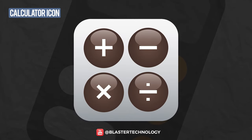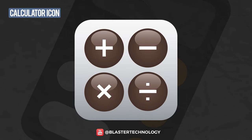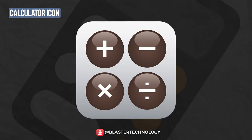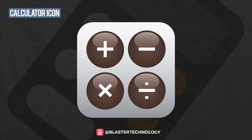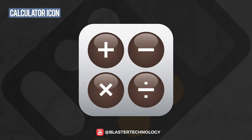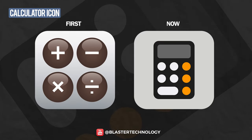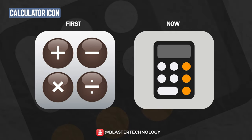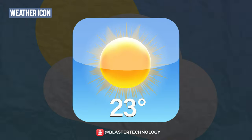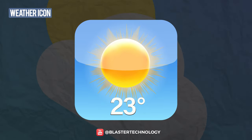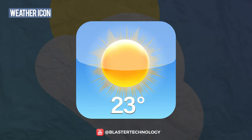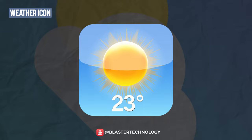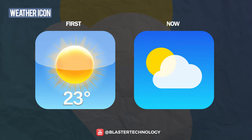The Calculator application icon was among the most modified icons. At first it showed calculation marks enclosed in brown circles. The app icon now is a real calculator but with a flat look. A bright sun showing the degrees was placed on a blue background — that was the Weather app icon on iOS 1. Now we just have a transparent color covering the sun.